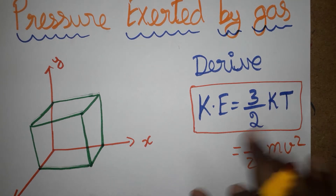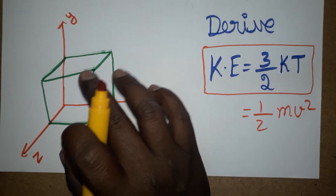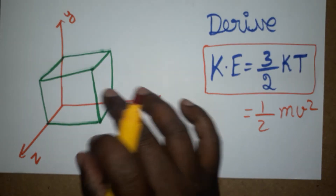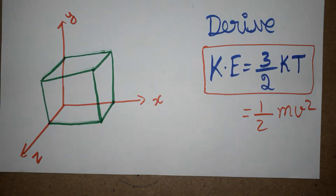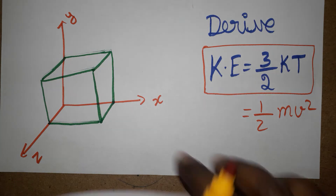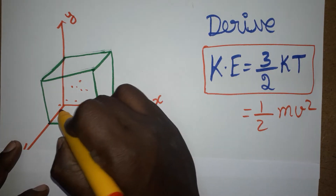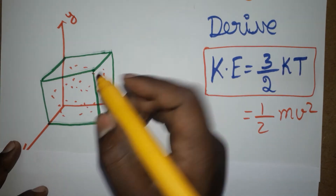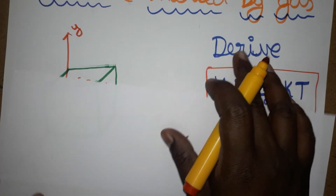I have taken per unit volume one cuboid, with length, breadth, and height equal — I consider it as a cuboid. In this cuboid, a lot of particles will be there, moving in random motion. All the particles will be moving or vibrating in a random motion, so I am going to start with the equation.